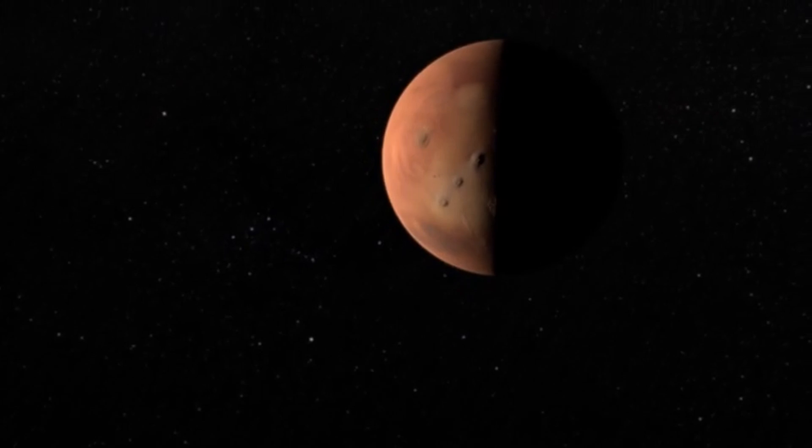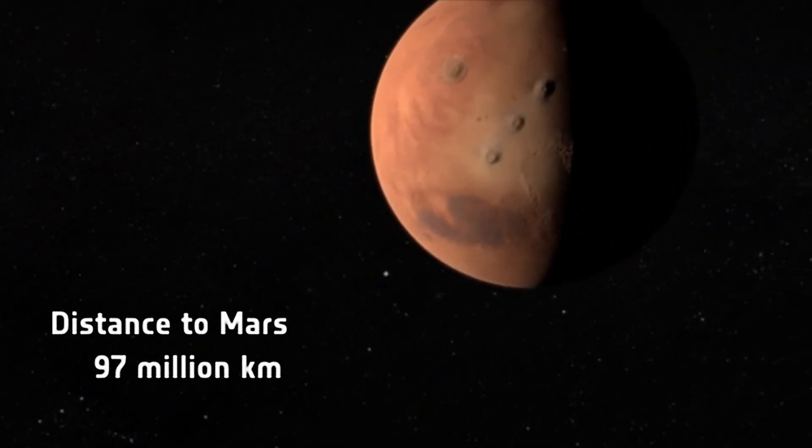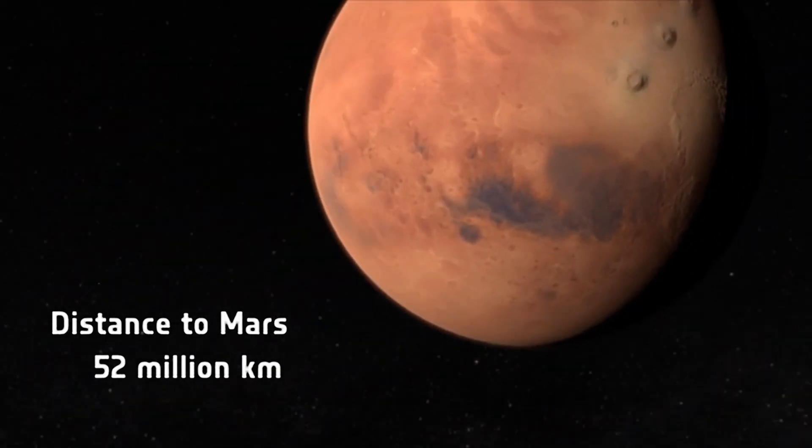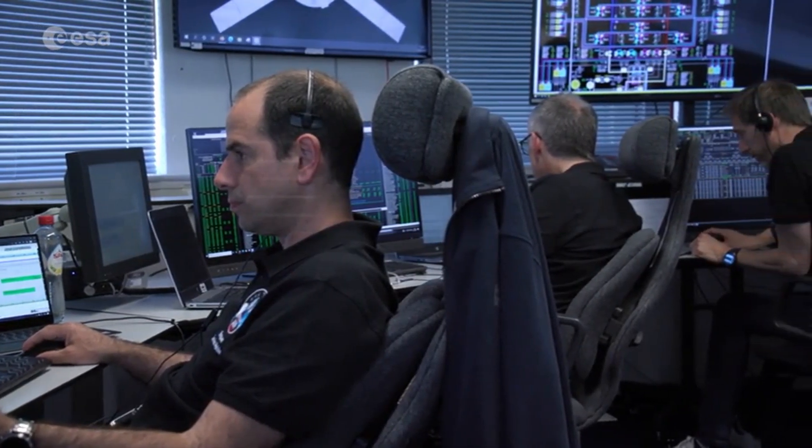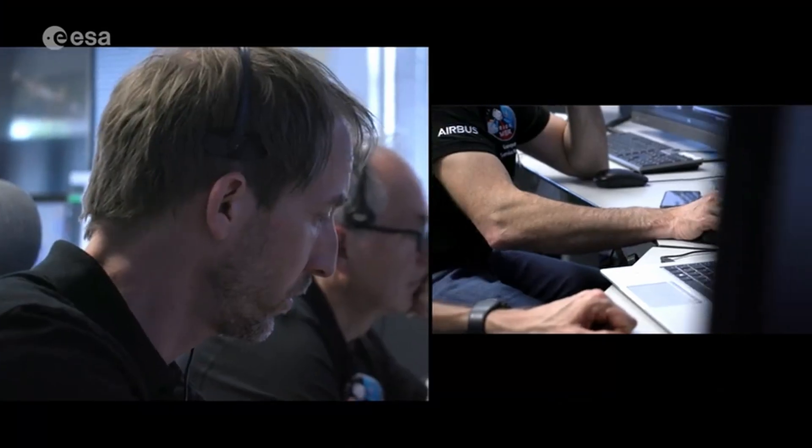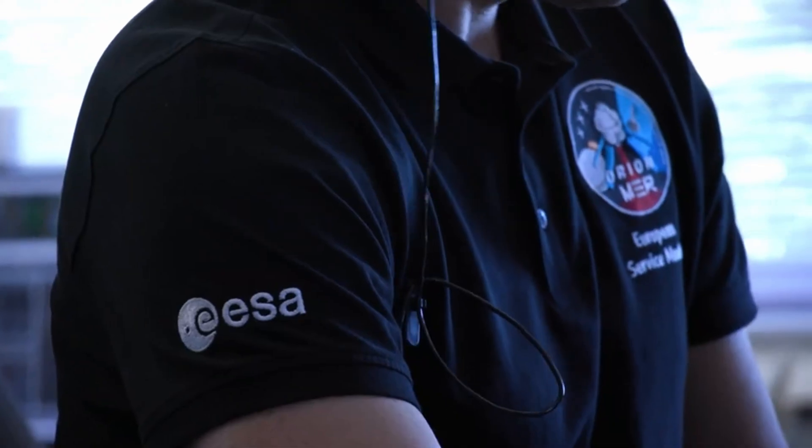By October 3rd, 3i Atlas will pass just 30 million kilometers from Mars, its closest approach to any planet. ESA and NASA have activated their Martian orbiters, redirecting them to watch, scan, and decode the secrets of this mysterious object.